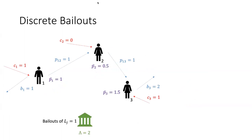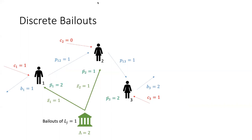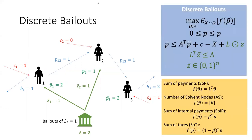Now assume a planner has a budget lambda equal to two and can allocate a stimulus check of value one or zero at any node. The optimal solution is to allocate to node one and node two, in which case the equilibrium is restored to its initial state.